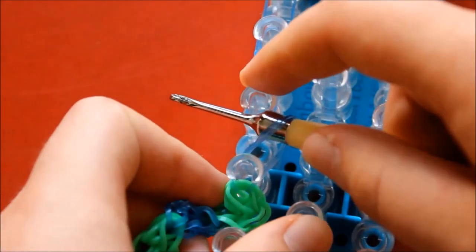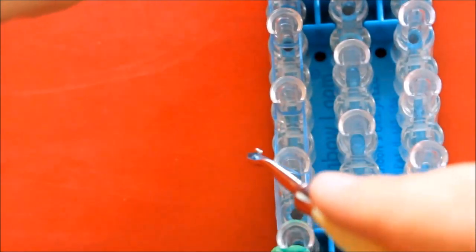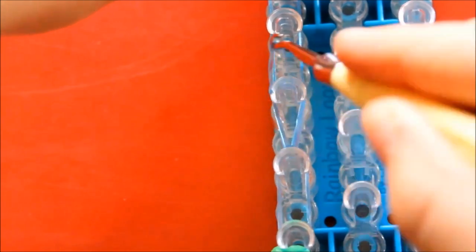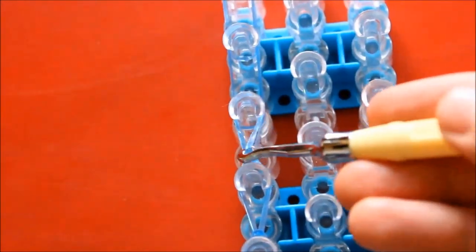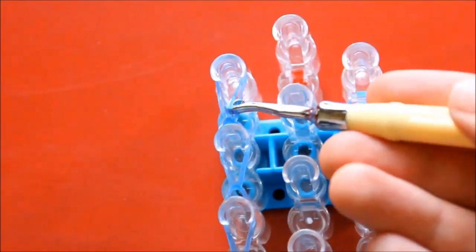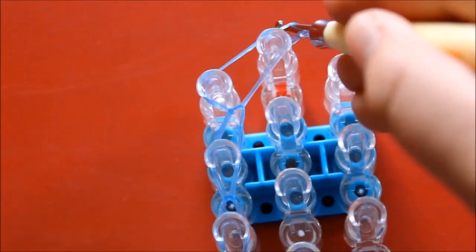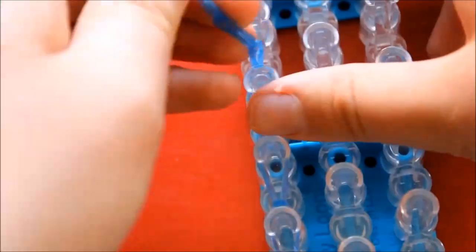Now stretch this band from that pin to that pin and make the single chain. Now pull this band to the middle and attach your S or C clip.